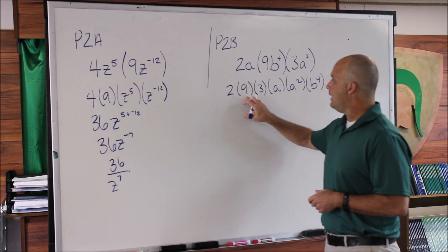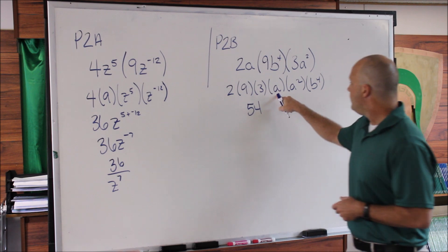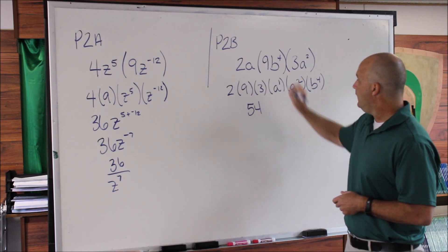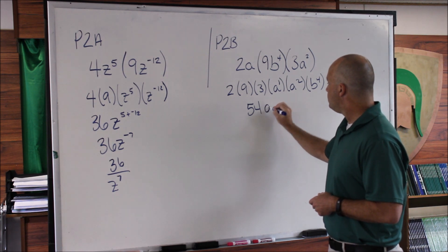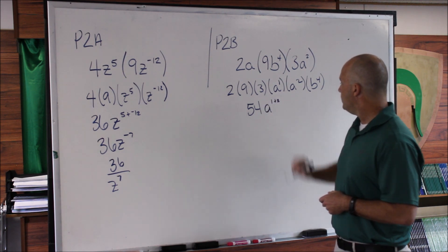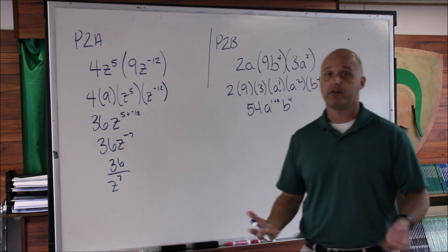So 2 × 9 is 18, × 3 is 54. So I get 54 here. Then I've got a, and this is a^1, times a^2. So a^1 × a^2 is a^(1+2). And then just bring down the b^4 because there's nothing there to combine it with.